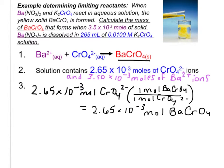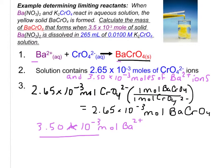Now let's try this for the barium. We have 3.50 times 10 to the negative 3 moles of barium ions. Again, we have a 1-to-1 molar ratio, so it's going to yield the same thing for barium: 3.50 times 10 to the negative 3 moles of product will be formed from the barium ion. We have a 1-to-1 mole ratio just like we did before, so the barium ion is going to produce that amount of product.